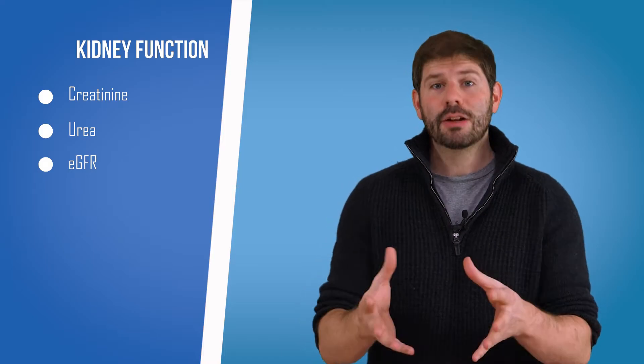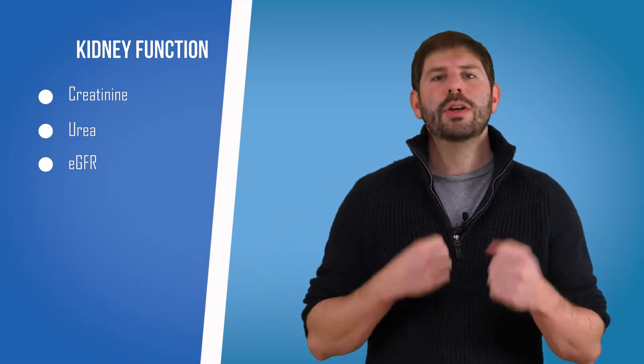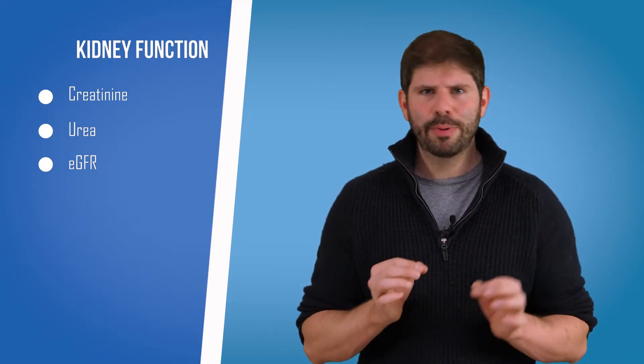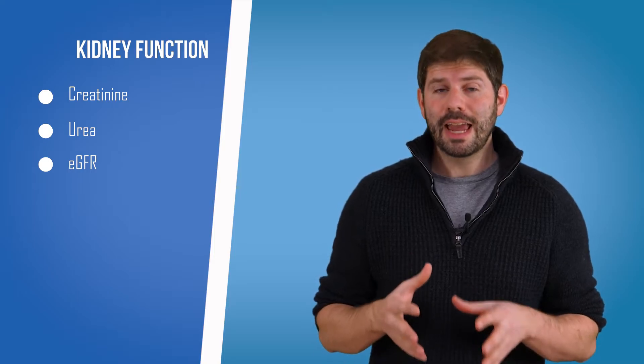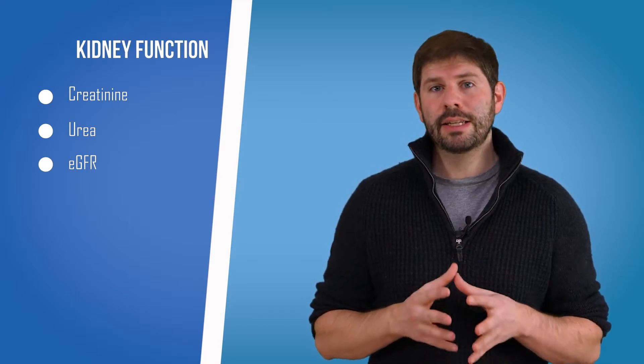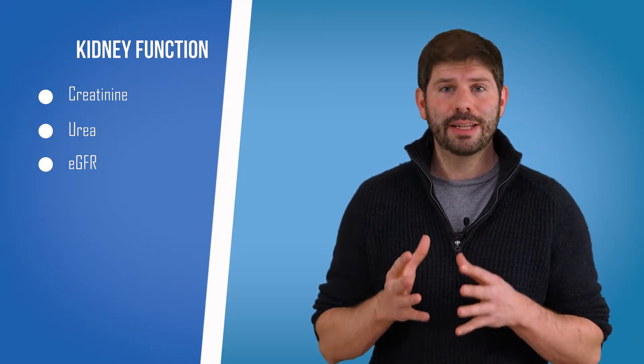Now what do they all mean? Creatinine is a breakdown product from your muscles. Every time you move, you're breaking your muscles down just a little bit and rebuilding them, and that produces creatinine. Your kidneys get rid of almost all creatinine in your body, so measuring it in your blood is a pretty good indicator of how your kidneys are functioning.